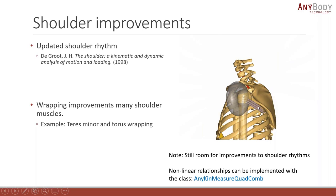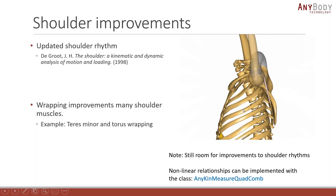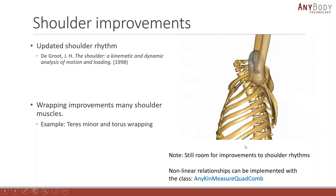Another improvement to the shoulder is that many shoulder muscles have new wrapping surfaces. Here's an example for teres minor, where the wrapping surface is implemented with a torus, ensuring that the teres minor wrapping is much more stable and can't fall off the edge of a cylinder. There is still room for improvement to the shoulder rhythm — it is currently a linear rhythm, but we have possibilities to create non-linear relationships between degrees of freedom. If any of you do research on shoulder rhythms, we would really love to collaborate.